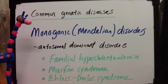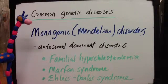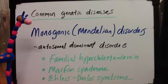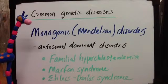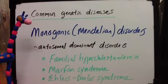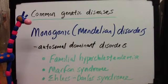In autosomal dominant disorders, both males and females are affected, and there is transmission from one generation to the other. This would affect 50% of children — if you were looking at a Punnett square, you would notice that about 50% of children are affected, whereas with autosomal recessive disorders you would have a 1 in 4 chance, or 25%.